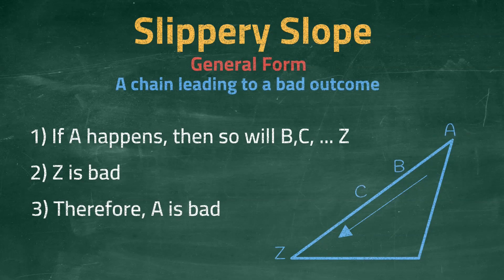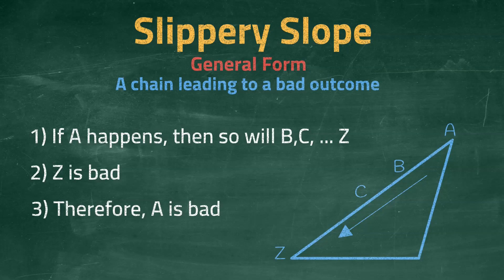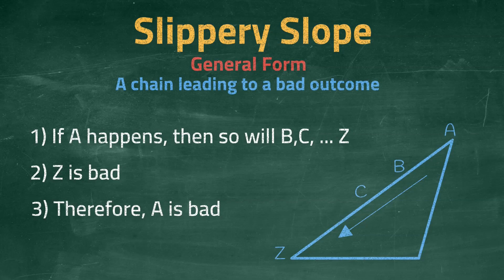But why might it be a fallacious argument? Well, one way is to dispute the second premise — the idea that Z is bad. Maybe it is not actually bad, and if not, the conclusion does not follow. Of course, this is unlikely, as most people who use the slippery slope argument will choose an outcome Z that is objectively bad. Another way to test if it is fallacious is to test each intermediate point. Does A necessarily lead to B? Does it cause B? The same for C and D, and so on all the way to Z. If any of these do not hold, then the link is broken and the conclusion does not hold.